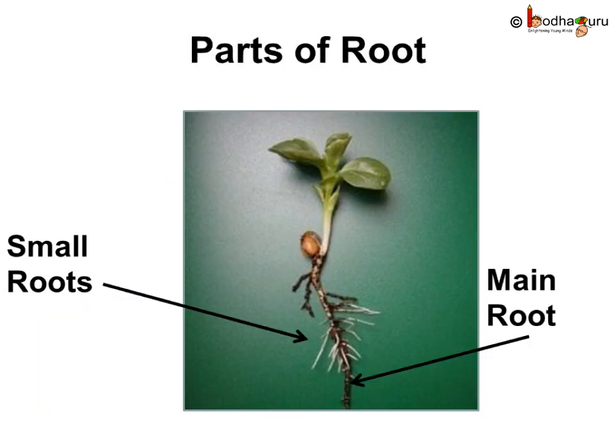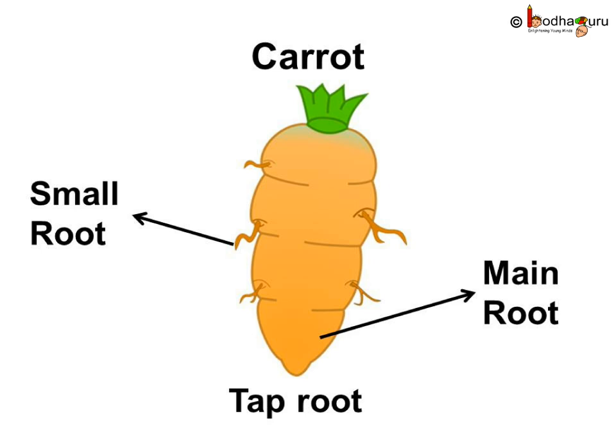Are the roots of all plants of the same type? Look at the root of the bean plant. We see it has one main root which grows from the end of the stem into the soil, and many small roots grow from this main root. This main root is called the tap root. The carrot is nothing but the main root of the carrot plant, and it has many small roots growing from that main root. So carrot is a tap root.